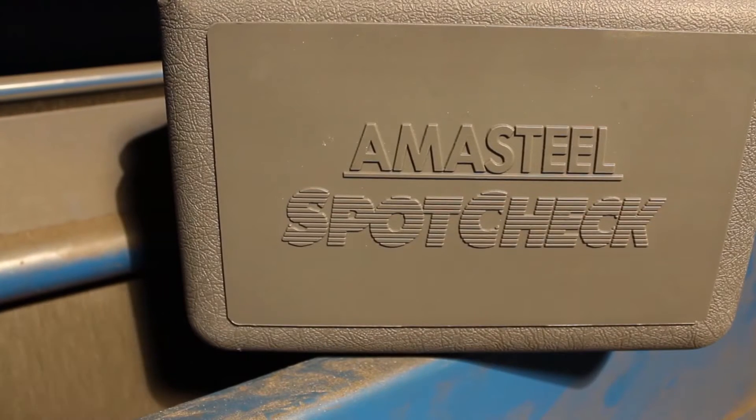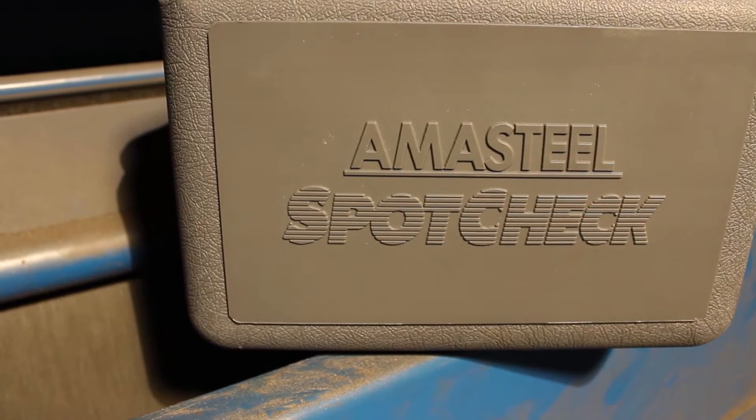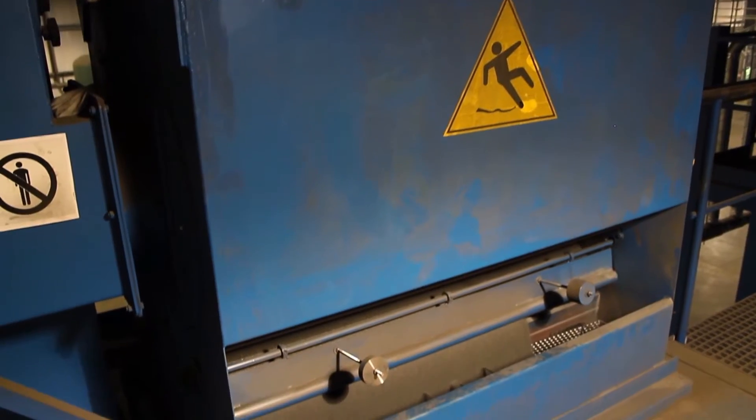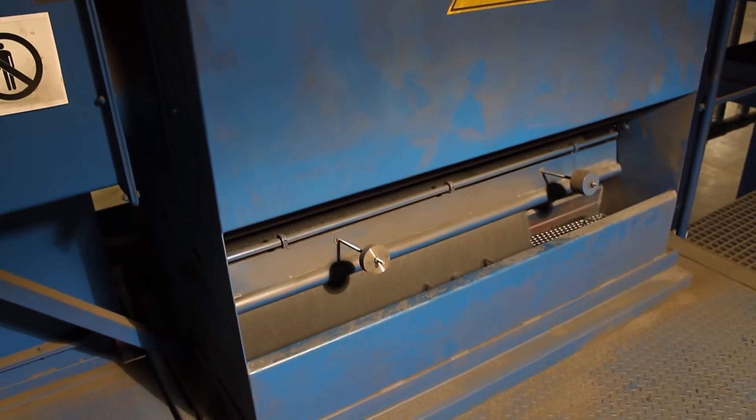The Irvin Industries Spot Check Kit is a reliable and easy-to-use tool to quickly and accurately inspect the shot blast machine's abrasive working mix.